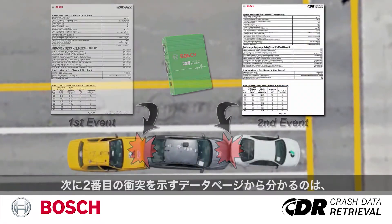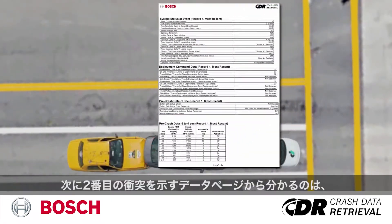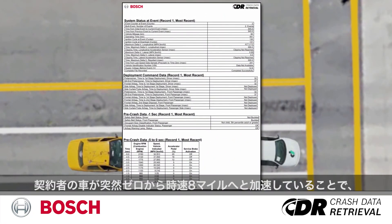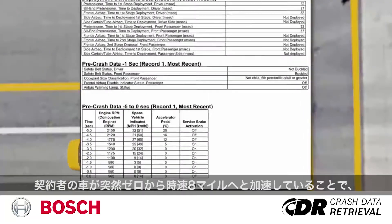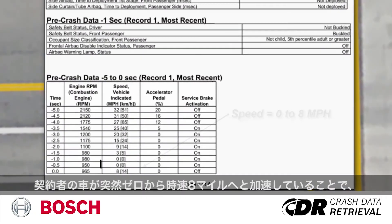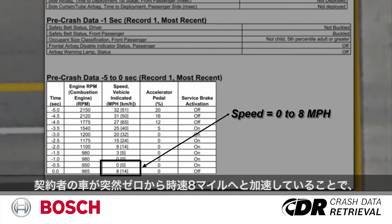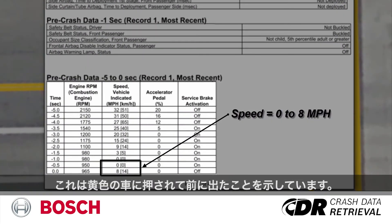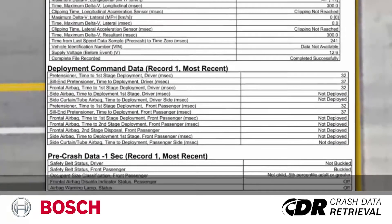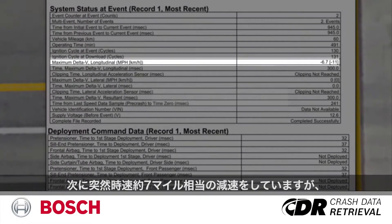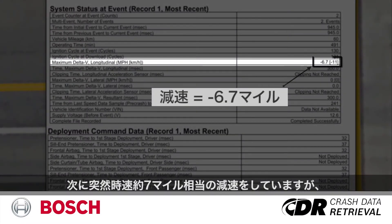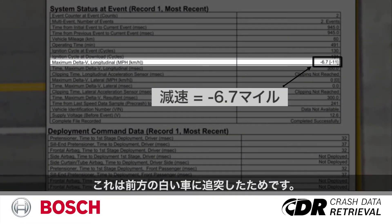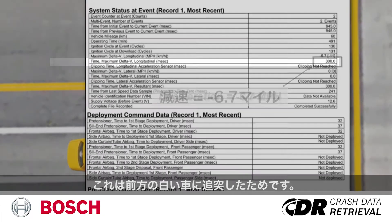The data page for the second impact shows your insured's vehicle abruptly went from 0 to 8 miles per hour from being pushed forward by the yellow car. It then experienced a sudden deceleration of approximately 7 miles per hour, which was the result of it hitting the back of the white car.